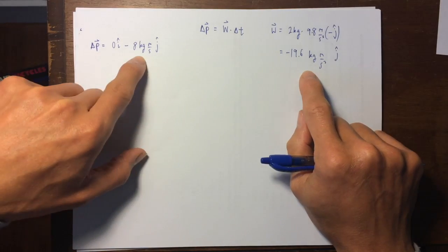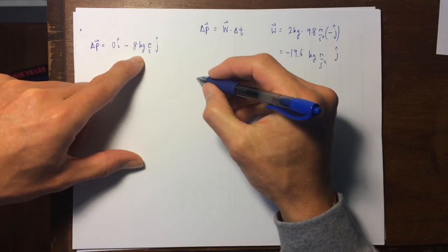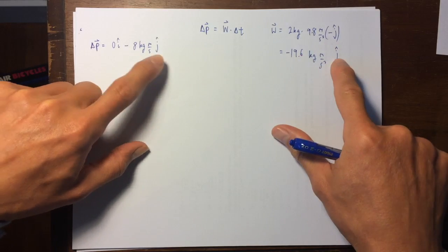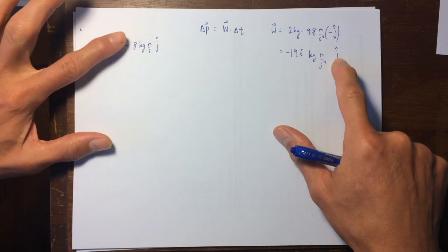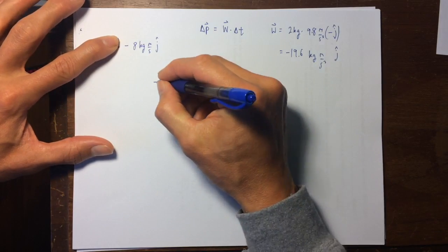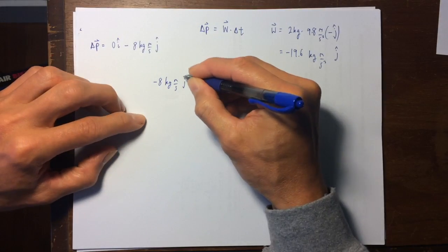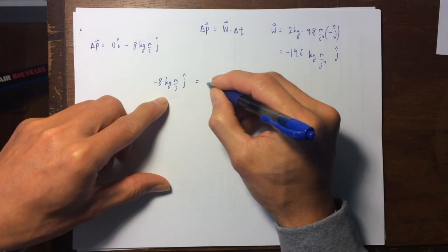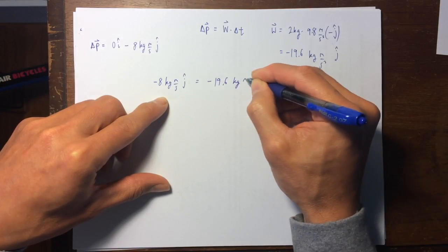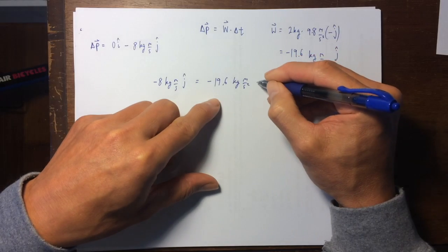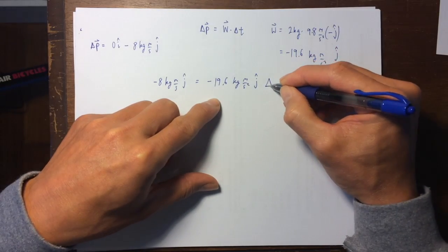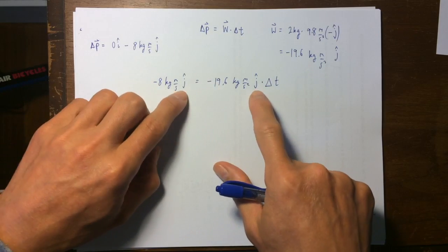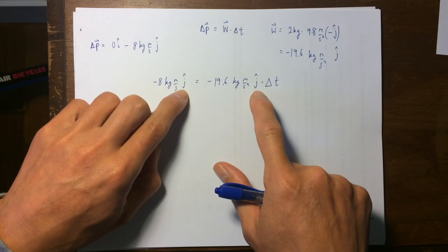Here is delta p. Yeah, so it's as easy as sorting everything out, so there's no i hat anywhere in the weight force, and the i hat in the delta p just happens to be zero. So, I've got negative eight kilograms meters per second, j hat, is equal to minus nineteen point six kilograms meters per second squared, with a j hat, but don't forget, our delta t. So delta t is this multiplied thing.